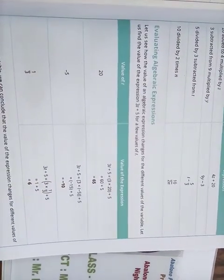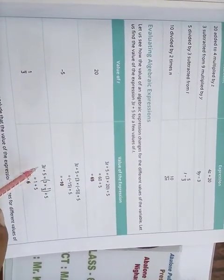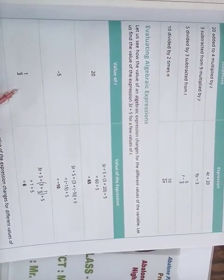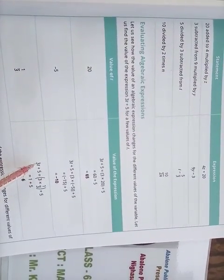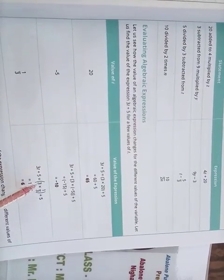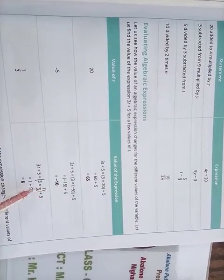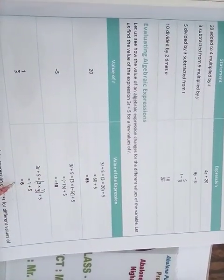3t plus 5, putting the value. T is 1 upon 3. So 3 multiplied by t means 3 multiplied by 1 upon 3 plus 5. 3 and 3 cancel out, we get 1. 1 plus 5, we get 6.